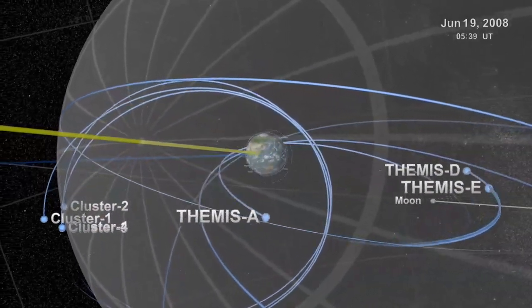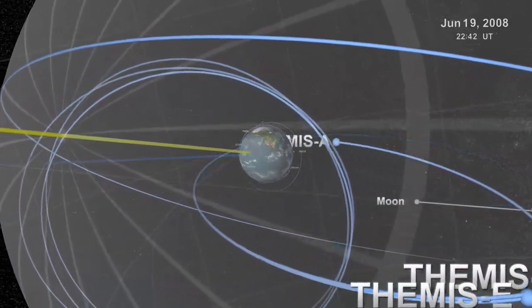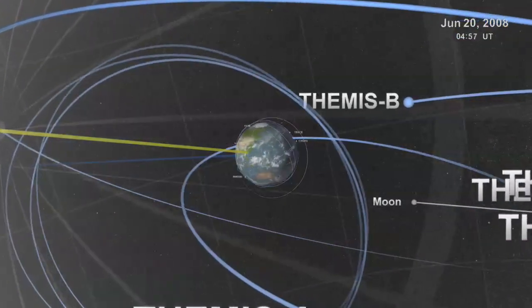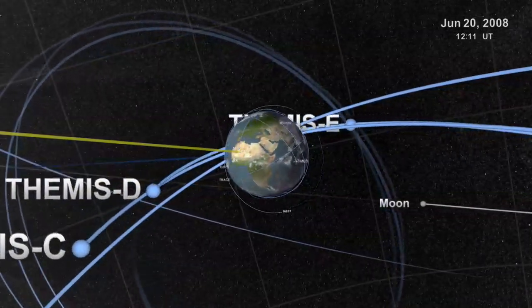New satellites have entered the dance, including the five Themis vehicles. The near-Earth fleet of satellites swarms like bees around a hive, some ranging out beyond the magnetosphere, some well inside.